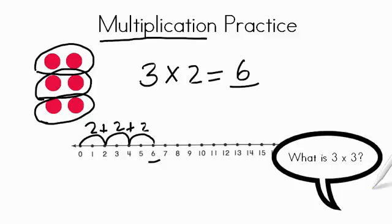Quick question, what is 3 times 3? 3 times 3 is 9. Great work.